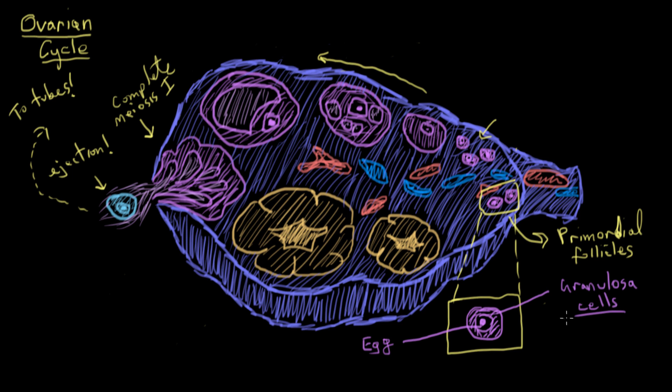The granulosa cells develop and become more numerous as the follicle matures. Now the granulosa cells also secrete a few hormones: estrogen, a little progesterone, and some inhibin. And we'll talk about the functions of those a little bit later on.